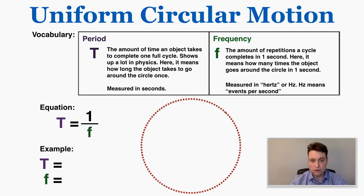Frequency is the amount of repetitions a cycle completes in one second. In circular motion, frequency means how many times the object goes around the circle in one second. Frequency is measured in Hertz (Hz), which just means events per second. So period is how long it takes for an event to repeat once, and frequency is how many events repeat in one second.